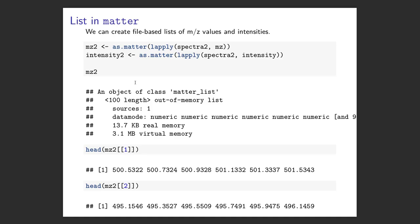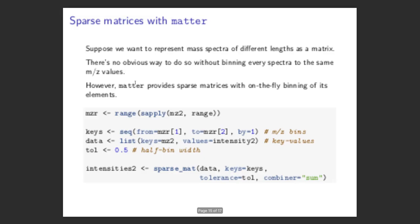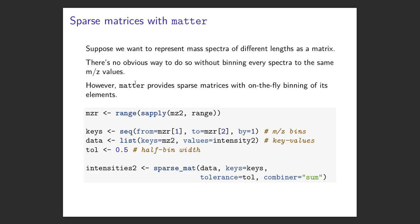So we can use matter like this to work on file-based lists when we have a bunch of different vectors — in our case mass spectra — that are different lengths and can't be represented as a matrix. But suppose we want to represent these 100 mass spectra as a matrix in some way, where rows correspond to mass features and columns to mass spectra. There's no obvious way to do that without binning all of these mass spectra to a common mz axis. So another thing I have in matter is sparse matrices that can do on-the-fly binning to a set of common keys — in our case, a common list of mz bins.